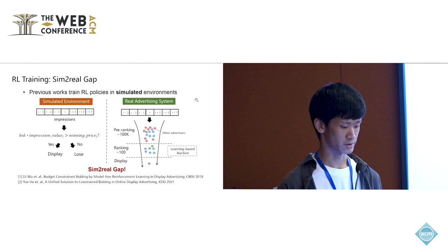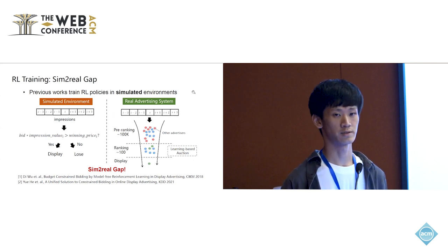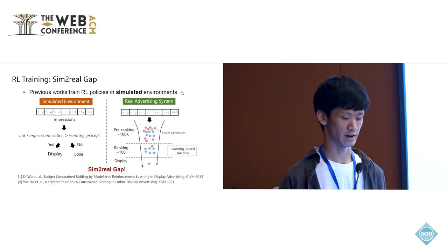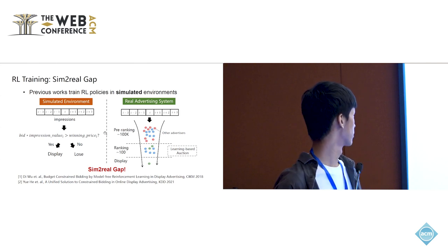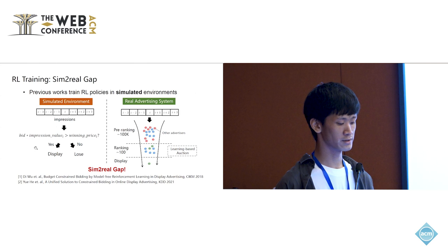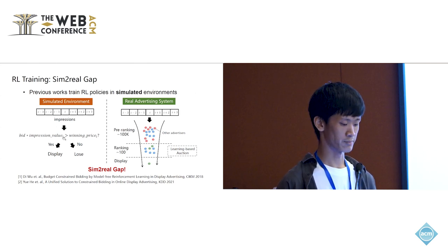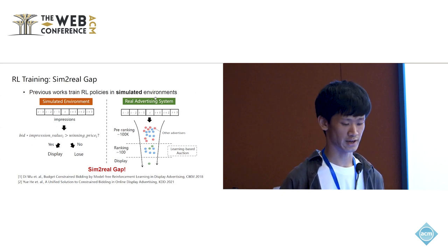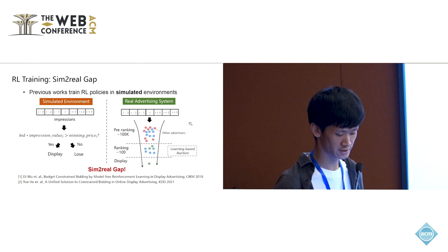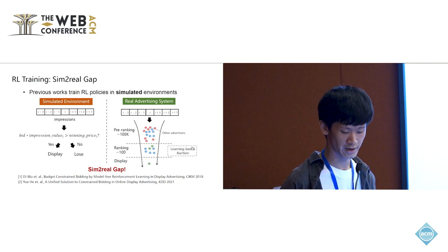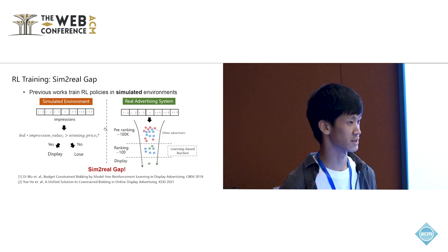But a problem occurs when we want to train an RL policy. Previous works train their RL policies in simulated environments. They will record the winning price of historical impressions and to decide if our bid will win the impression will directly compare it with the recorded winning price. This is very simple. But the real advertising system is far more complicated. It may have this cascading ranking architecture. Also, the auction mechanism may be learning-based. It may even be parameterized by a neural network. If we train in this simulated environment and we deploy our policy in a real system, there will be a sim-to-real gap.